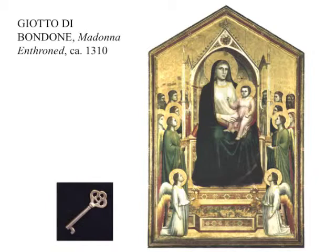Now here we have a work by Cimabue's student, his pupil, Giotto di Bondone. Giotto was originally from a village close to Florence, Italy. According to the story, Cimabue actually encountered him as a young boy — Giotto was only about twelve years old, out in the pasture drawing his sheep. Apparently Cimabue was so impressed that he decided this young boy needed to become his apprentice. Giotto became really one of the most important Florentine artists of this period, outstanding not only as a painter but also as a sculptor and as an architect. He is typically considered the first genius of the Italian Renaissance.